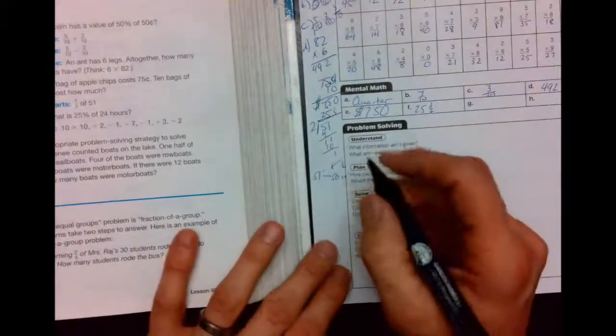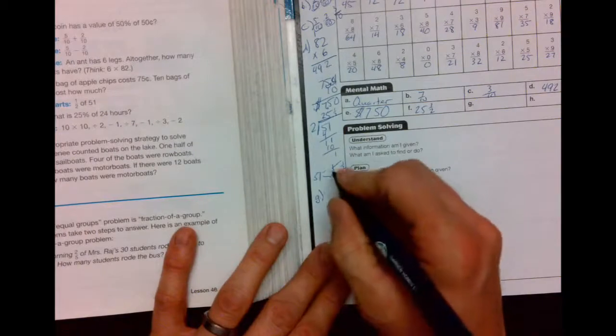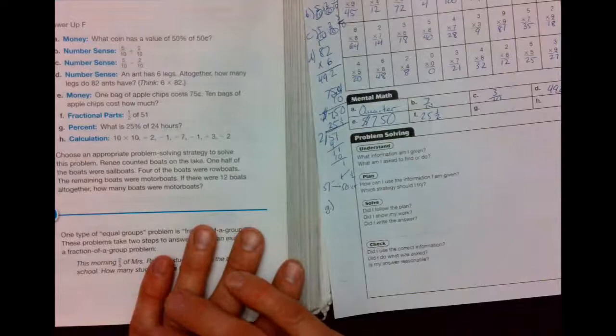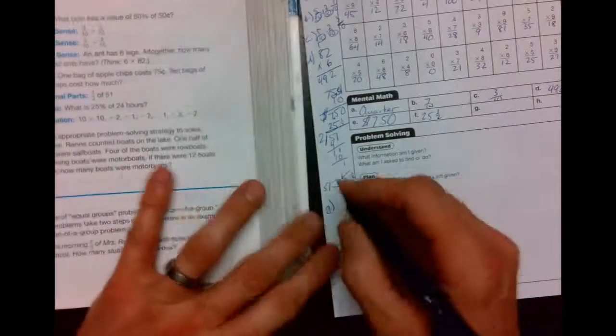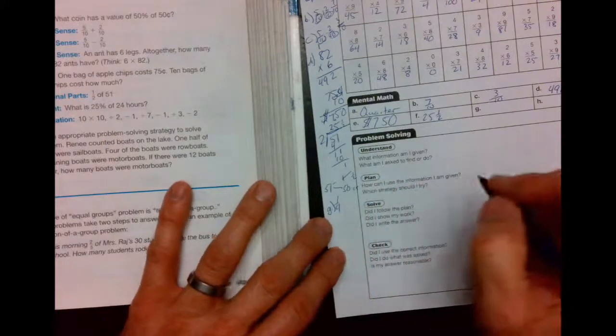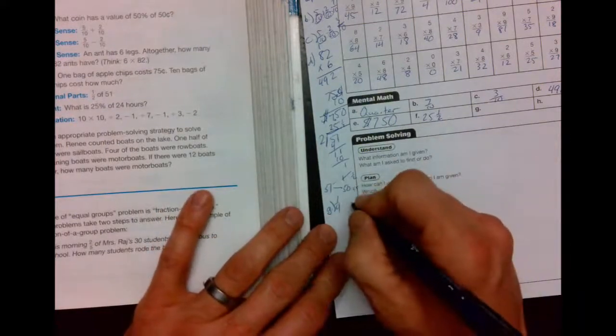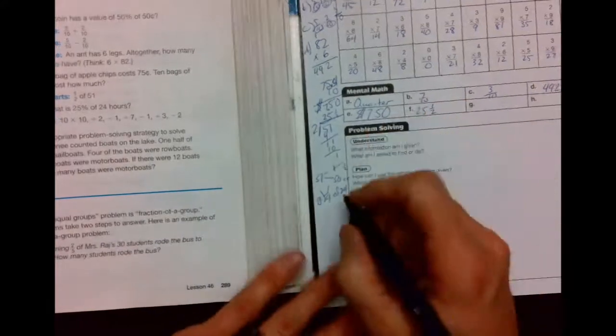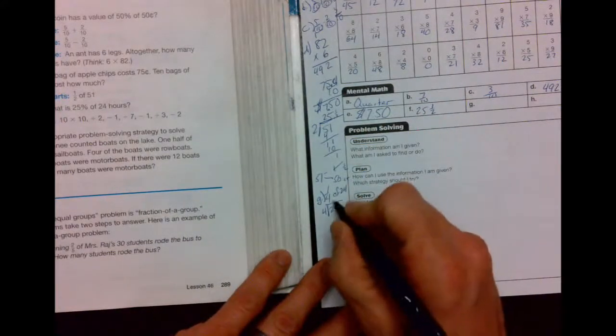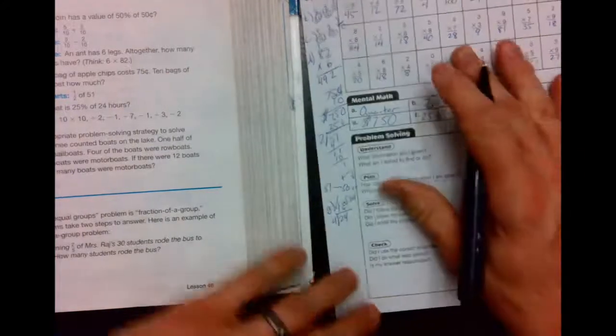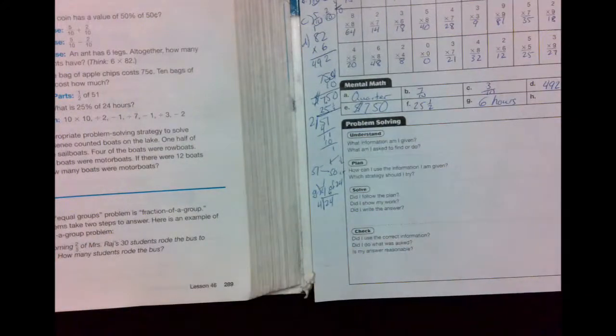Alright. G says 25 percent of 24. When I say 25 percent, you say 1 fourth. The faster we have those memorized, the better. When I say 25 percent, you say 1 fourth of 24. 24 divided by the bottom number equals 6. 6 what? 6 hours.